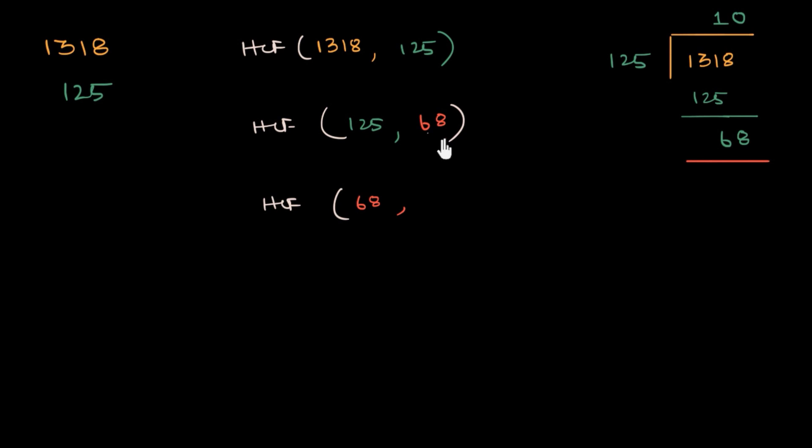It looks like 68 will just go once because 68 into 2 is going to be 120, 136. So that's not gonna work. So I'm just gonna subtract 68 from 125. 125 minus 68.